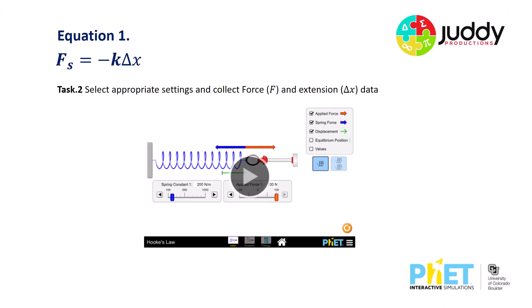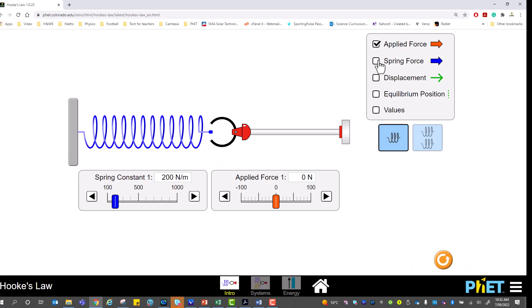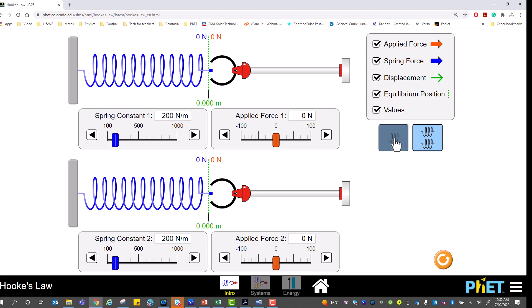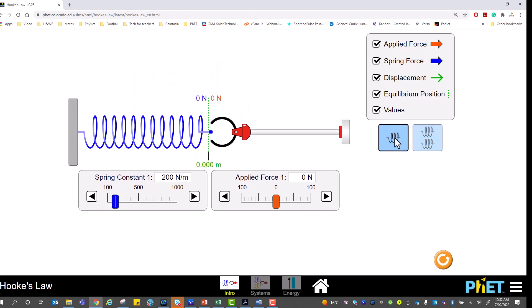Once into the simulation, we want to select the appropriate settings and collect the relevant force and extension data. We want to tick the applied force, spring force, the displacement, the equilibrium position, and the values. We're using a single spring. We could investigate a double spring system at the same time, but let's go back to our single spring.